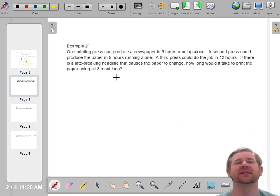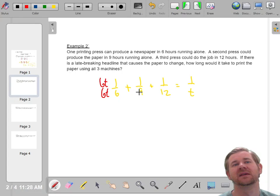This one says one printing press can do it in six hours, so one over six. A second can do it in nine hours, one over nine, and a third can do it in 12 hours, and I want to know how long would it take if we could run them all together. So we need a common denominator between six, nine, and twelve. Thirty-six. So this guy needs a six t, this guy needs a four t, and this guy needs a three t.